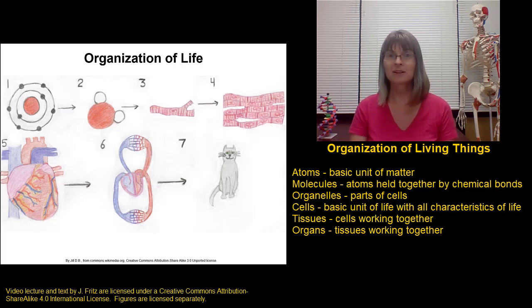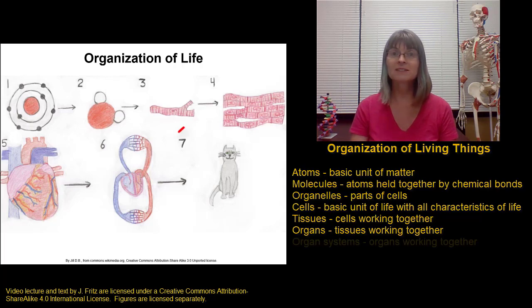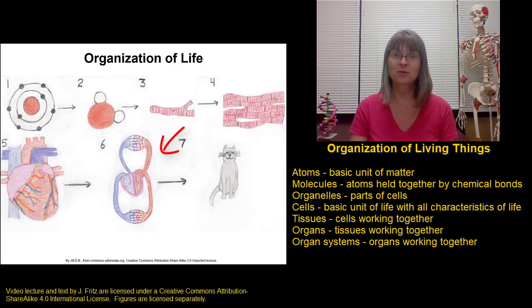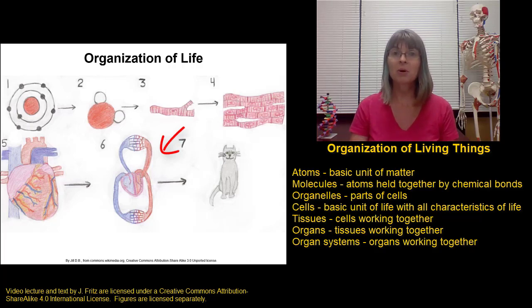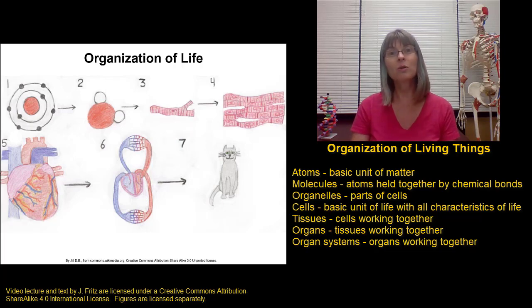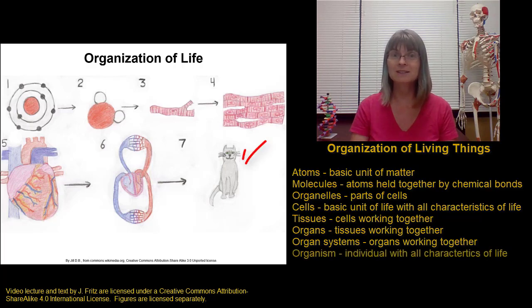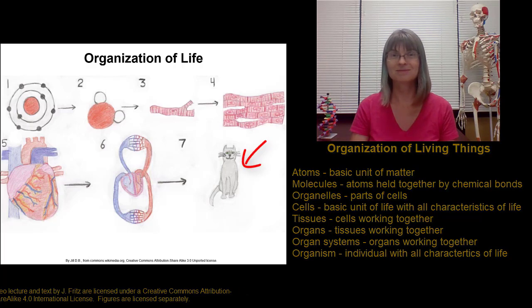The organs then work together in groups to make organ systems. When we take the heart along with the blood vessels and the blood, we have the circulatory system, responsible for circulating gases, nutrients, and wastes throughout the body. When we take the kidneys and join them with the bladder, ureter, and urethra, we have the urinary system, which removes waste from the blood and removes it from the body. Only when we put all of the different organ systems together can we finally make an organism, or a human.